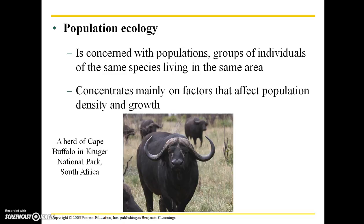Population ecology looks at a broader level — it's concerned with populations. Populations are the smallest biological unit capable of evolving; they are groups of individuals of the same species living in the same area and capable of interbreeding. Population ecology concentrates mainly on factors that affect population density and growth. With this population of Cape buffalo you might ask: which predators are influencing this herd's density? How is predation affecting the growth rate? How are diseases playing into that?